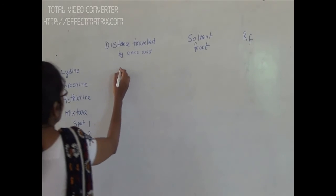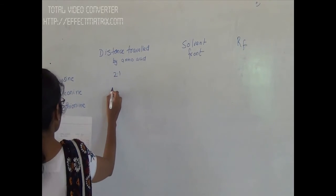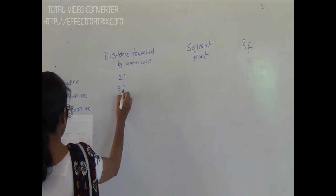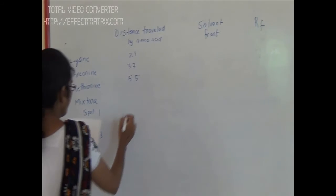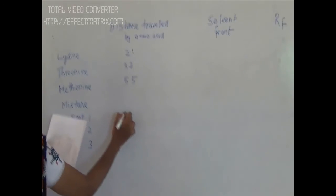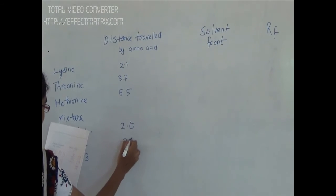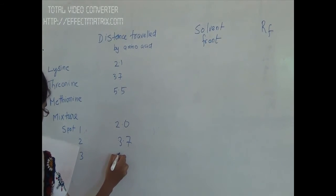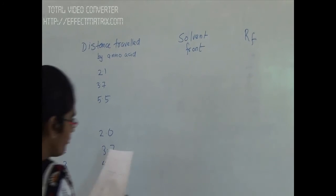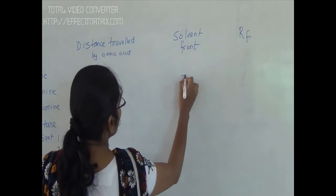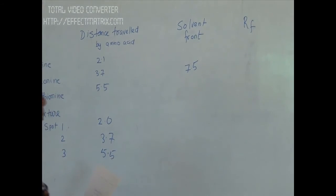Distance travelled by sample one is 2.1 cm. Distance travelled by sample two is 3.7 cm. Distance travelled by sample three is 5.5 cm. In the mixture, spot number one is 2.0 cm, spot number two is 3.7 cm, and spot number three is 5.5 cm. The solvent front is 7.5 cm.